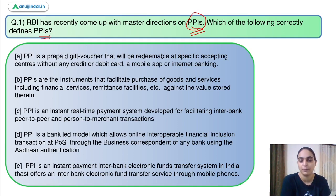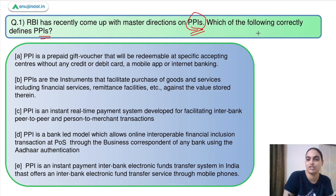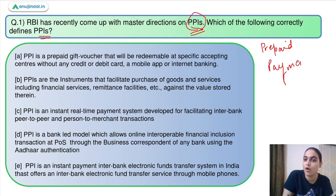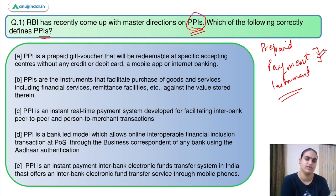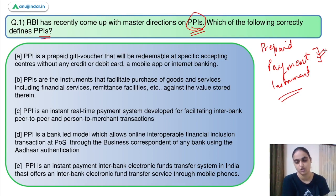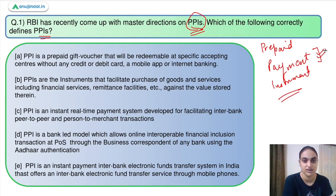Talking about what prepaid payment instruments are and how RBI defines them — as the name suggests, they are prepaid instruments. You have already made the payment for them and you can utilize them for making payments for different goods and services. So you have a debit card, credit card, a wallet, or a gift card, and you can use that to buy different goods and services. This is how RBI defines PPIs.